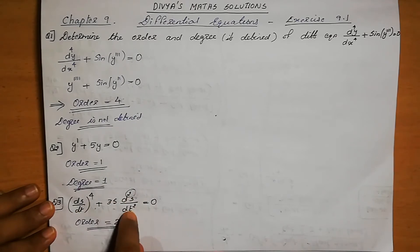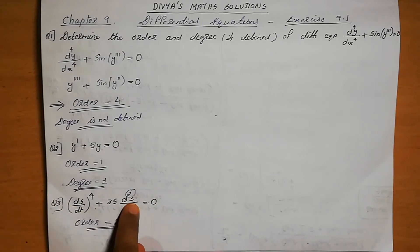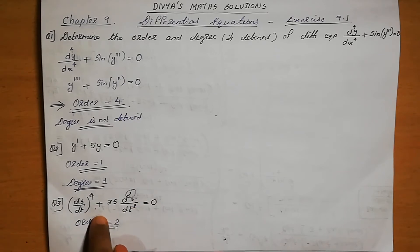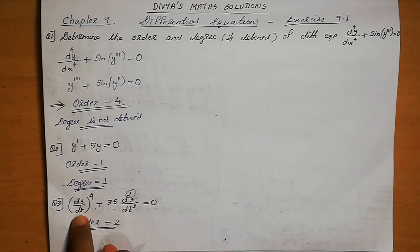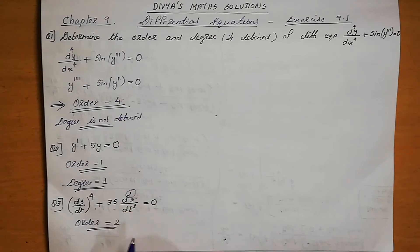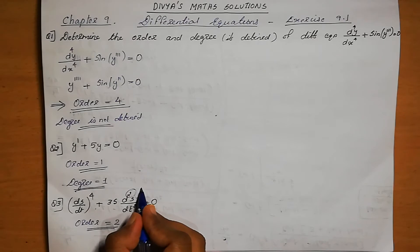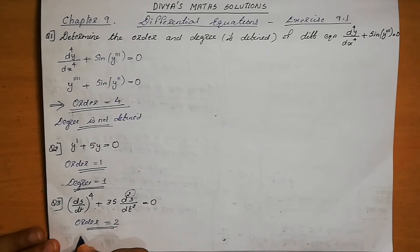To clarify: ds/dt is the first derivative and d²s/dt² is the second derivative — that is s''. So the order is 2. This equation is in polynomial form. The power of the highest order term (d²s/dt²) is 1, so the degree equals 1.